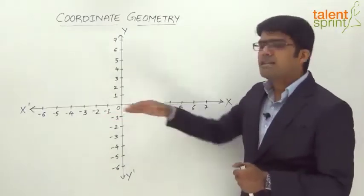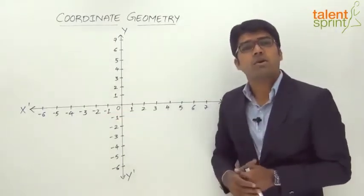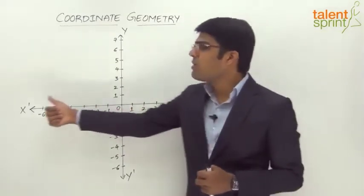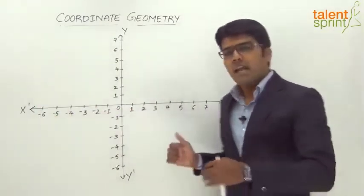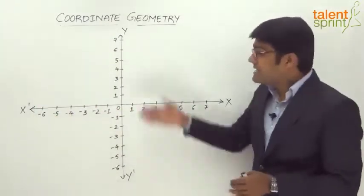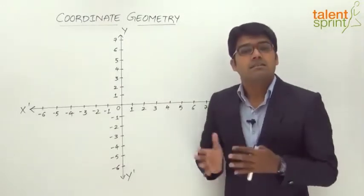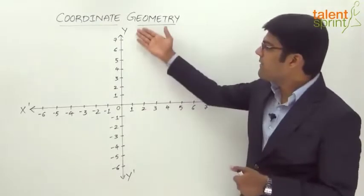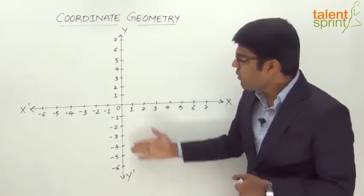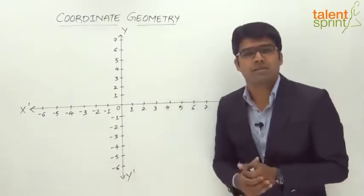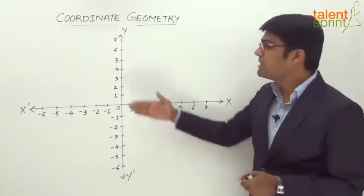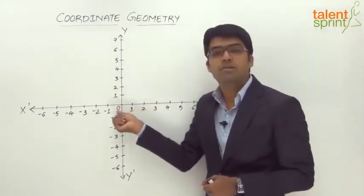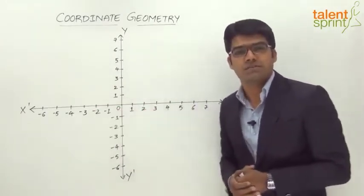This horizontal line is known as the horizontal axis, denoted by xOx', and it extends up to infinity. The vertical line is known as the vertical axis, denoted by yOy', which again extends up to infinity. These are the two mutually perpendicular axes which intersect at the point O, known as the origin.